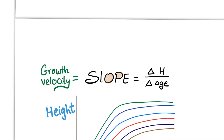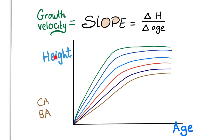Here is the growth chart — height on the y-axis, age on the x-axis. The top curve is the 97th percentile and the lowest is the 3rd percentile; anything between is average. Some versions use 95th to 5th, but usually it's 97 to 3, so read the chart carefully. Short stature is anything below the lowest curve.